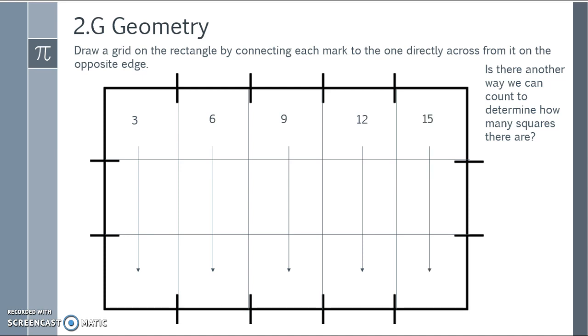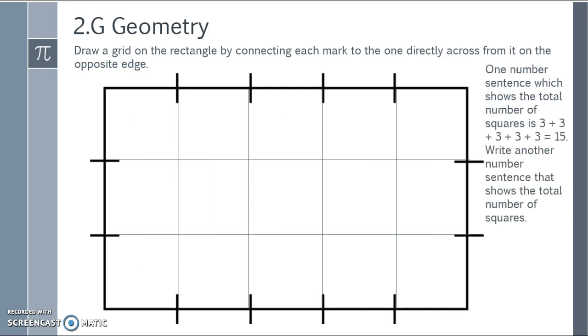One number sentence which shows the total number of squares is 3 plus 3 plus 3 plus 3 plus 3, so 15. Take a moment, pause the video, and write another number sentence that shows the total number of squares. I also came up with 5 plus 5 plus 5 equals 15, or 1 plus itself 15 times for 15. This is a great introduction to multiplication. Even though they don't recognize that this is multiplication, that it is repeated addition.